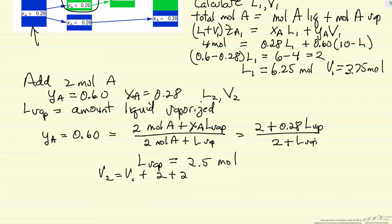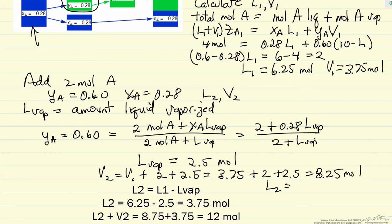That means we end up with final V2 with V1 plus 2 plus 2.5. So 8.25 moles of vapor, and therefore moles of liquid is 3.75, since we have a total of 12 moles.